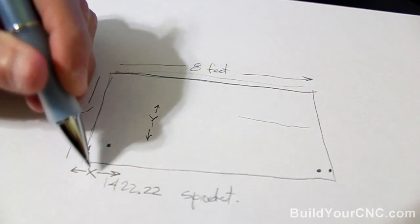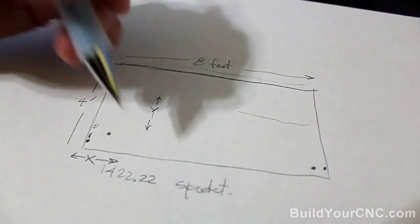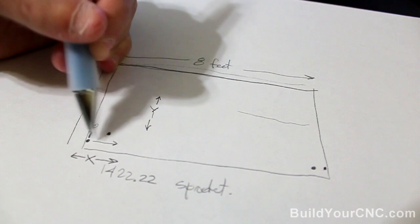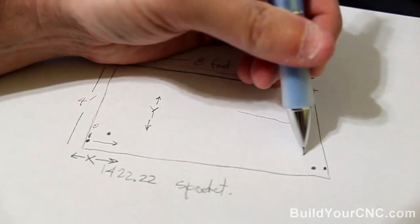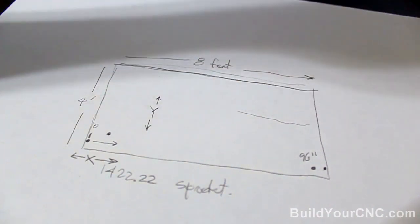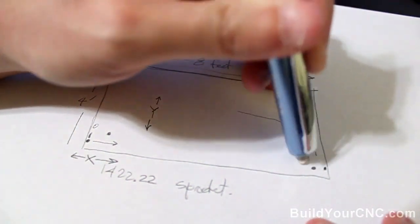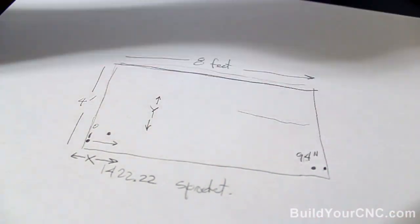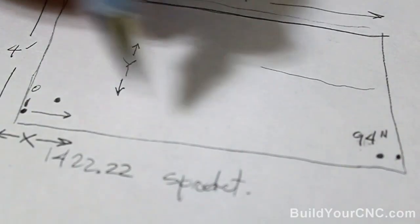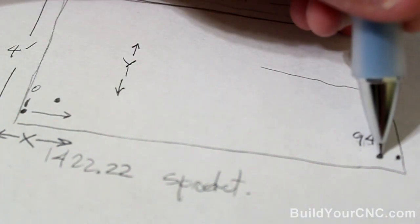So we'll mark it here, we'll set the x to be 0 at this point. Okay, so now we need to get the axis to, I would say about 96 inches. That's not right, because 96 inches is 8 feet, so I need some wiggle room. I'll go to about 94 inches.